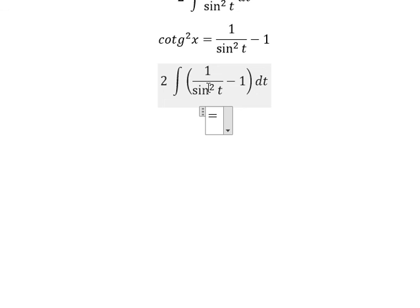The integral of 1 over sine t square, you will get negative cotangent t. The integral of number 1 is t, so we have negative 2 cotangent t minus 2t, and we have C as the constant.